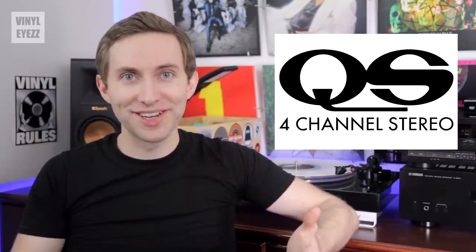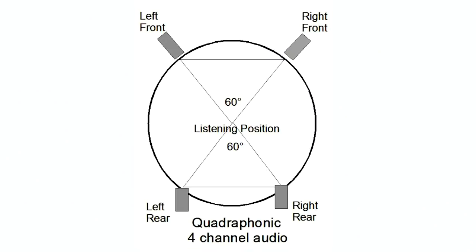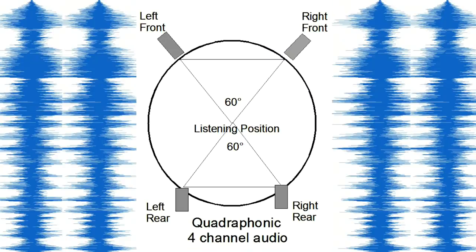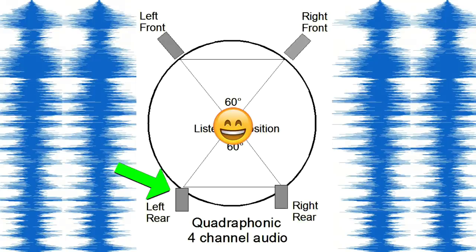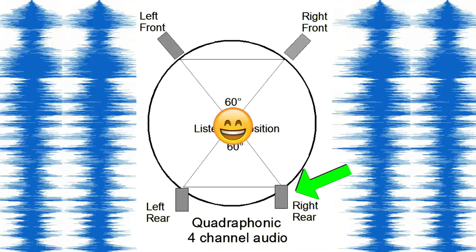That brings us to quadraphonic, which was introduced to the world in the 1970s. As the name implies, this type of sound used four separate channels of audio and was meant to be played with four speakers. In the setup, the listener would be placed in the center, with the left front, left back, right front, and right back speakers placed in a square around them.